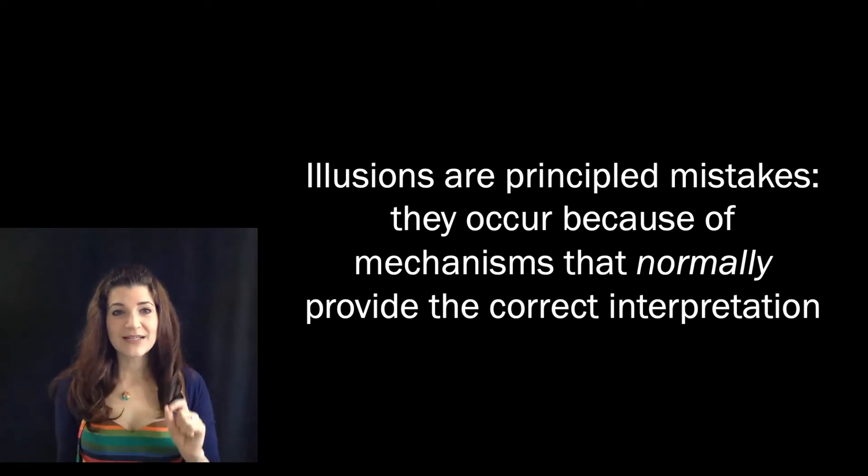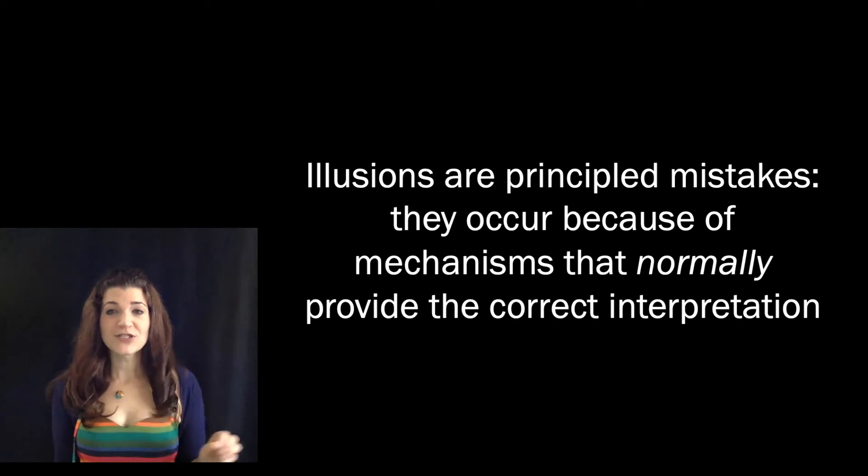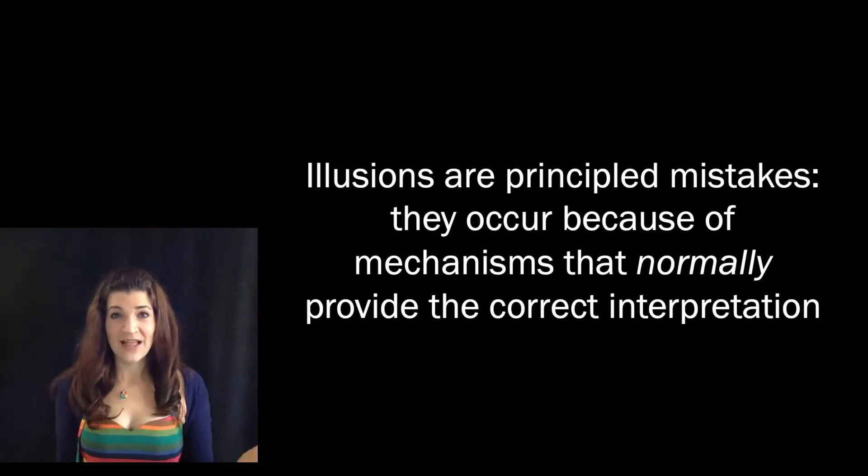So illusions occur primarily because of mechanisms that normally provide the correct interpretation. That's why we use them, mostly they're right. So we refer to illusions as principled mistakes. They are errors in perceptual processing that reveal something important about normal visual processing. The fact that normally they help us means usually using those processes doesn't lead to errors.